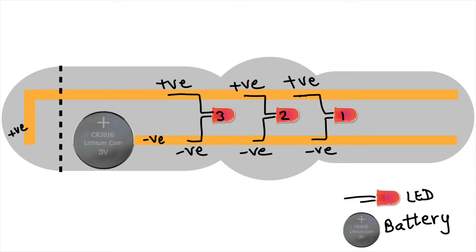And all the three LEDs, their long legs are connected to the top side of the copper tape. And the shorter legs of the LEDs are attached to the copper tape which is pasted at the bottom of the bracelet.